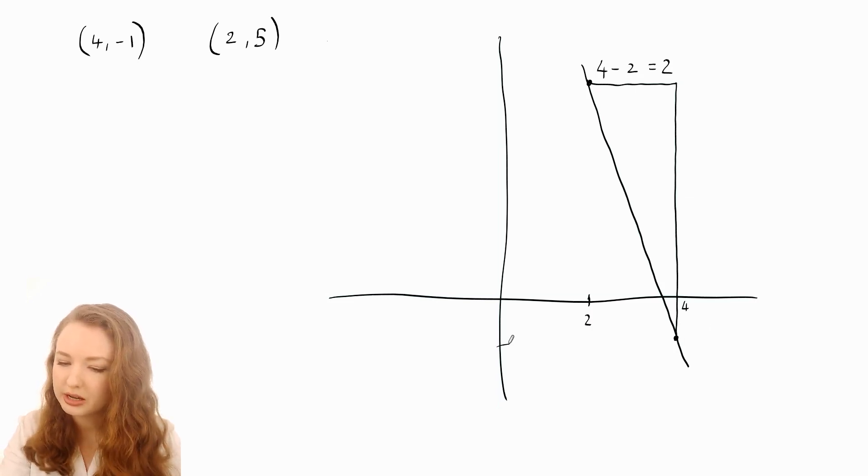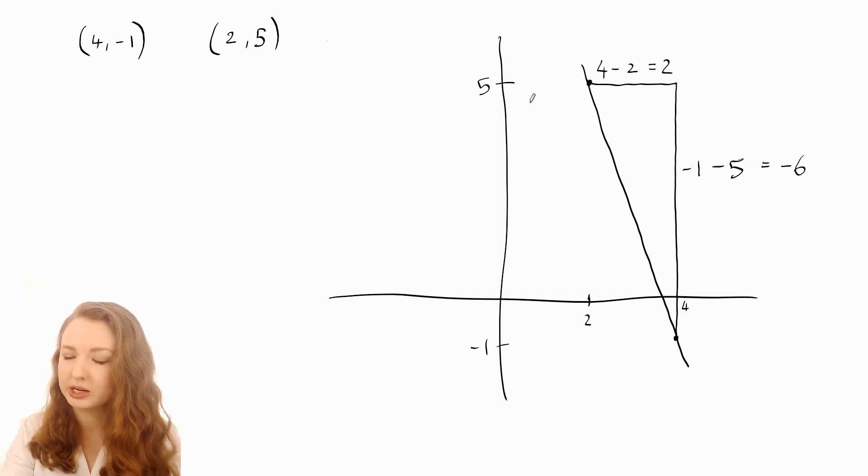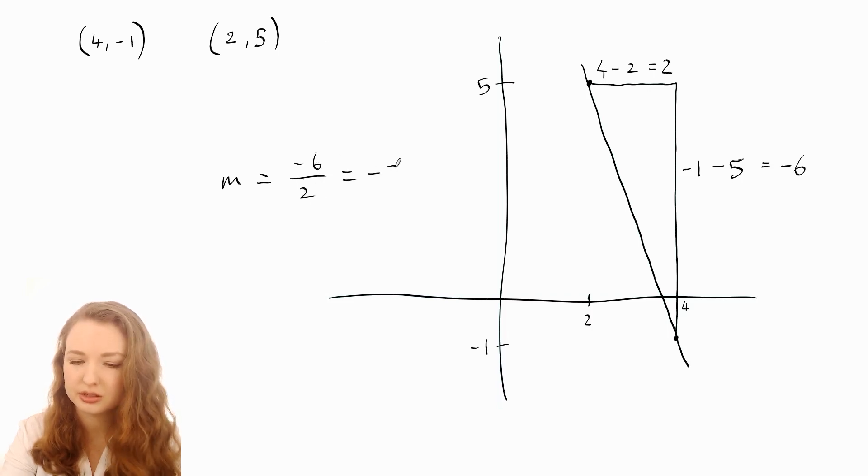Let's work out the rise as well. The y-coordinate here was negative one and the y-coordinate here was five, so there's a distance of six. But if it's going down, we want to consider the rise to be negative, so that's negative six. You can work that out from doing negative one minus five, which gives you negative six. We've got the rise and the run, so we say M is negative six over two, which makes negative three.